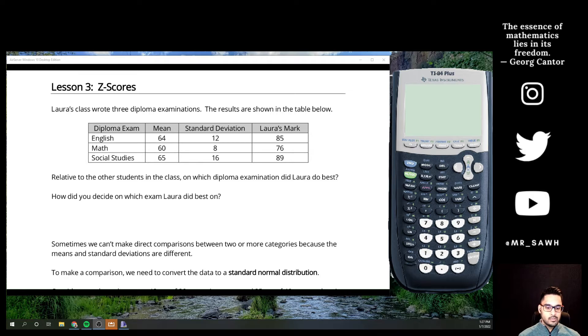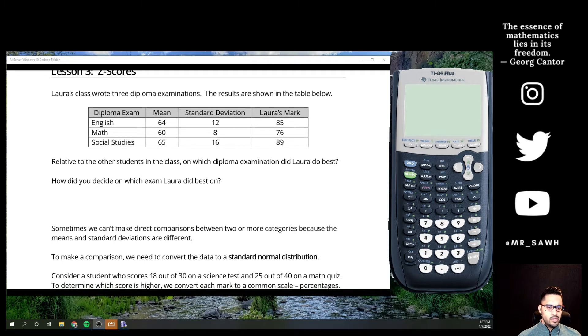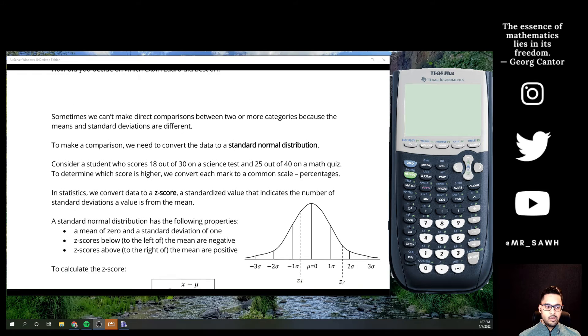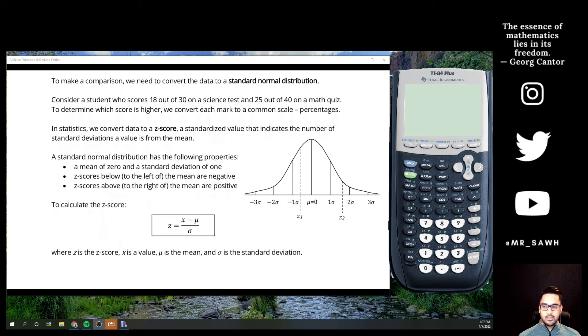You have to convert them to the same type of units to really determine which one you did better on. The fraction or decimal versus a percentage. Many people, it's just easier to talk in terms of percentages than it is in a different measurement style. We need to convert the data so it's all the same, and the way we can do that is by using what we call a z-score.